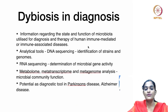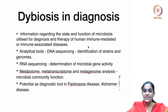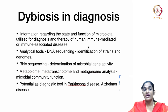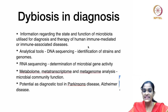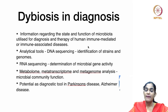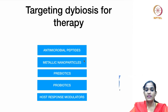Dysbiosis being used in diagnosis: information regarding the state and function of the microbiota is utilized for diagnosis and therapy of various human immune-mediated diseases. The analytical tools include DNA sequencing to identify strains and genomes, RNA sequencing to determine microbial gene activity, and metabolome, metatranscriptome, and metagenome analysis to find microbial community function. These tools have already been tried as potential diagnostic tools in Parkinson's disease and Alzheimer's disease.